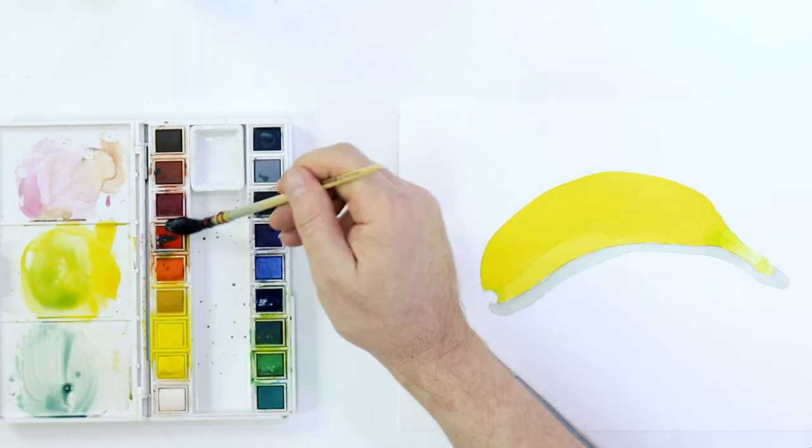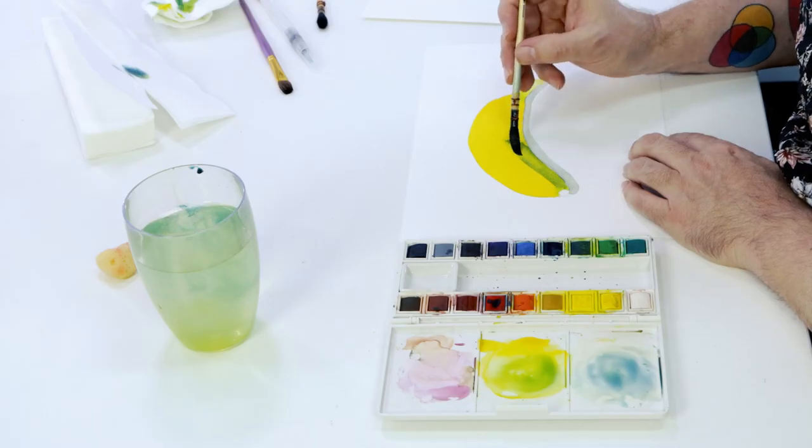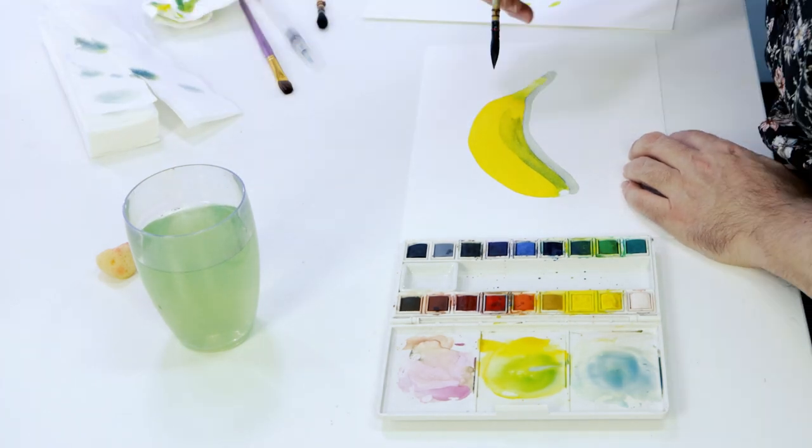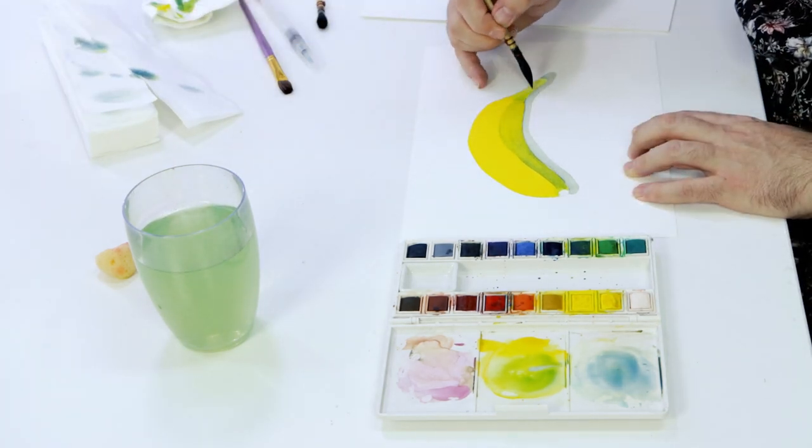Create a dark blue mix and paint it into the side of the banana in shadow. As the blue is laid on, add more water so that it lightens as it reaches the stalk.